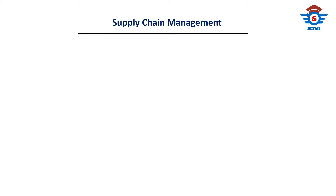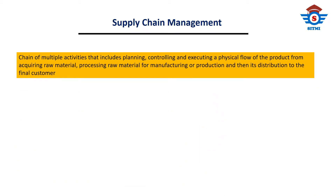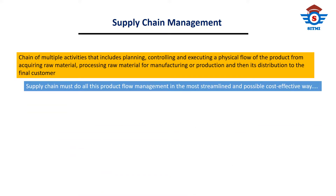Supply chain management is the chain of multiple activities that includes planning, controlling and executing a physical flow of the product — from acquiring raw material, then processing raw material for manufacturing or production, and then its distribution to the final customer. Supply chain must do all this product flow management in the most streamlined and cost-effective way possible.